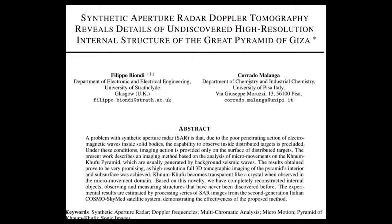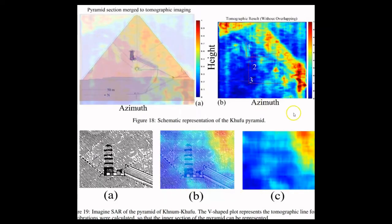Here we go with tonight's episode. The following research comes from a recently published paper: Synthetic Aperture Radar Doppler Tomography Reveals Details of Undiscovered High Resolution Internal Structure of the Great Pyramid of Giza. The team used this technology to scan the Great Pyramid and it produced images which they have overlaid on a diagram. At this point, I will say that these results are very inconclusive and the diagrams that they present are a bit of a stretch of the imagination based on what I can see from these scan images.